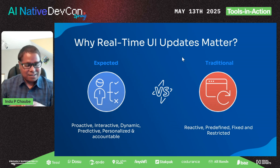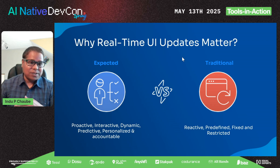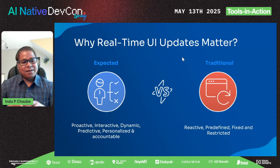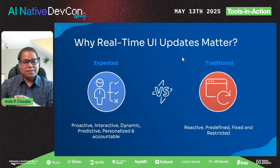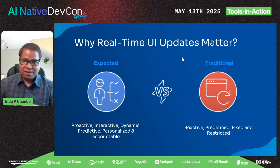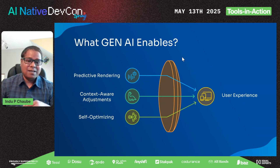There is a lot of discussion happening behind the scenes about how publicly generated models can connect with user data — nobody wants to let that connect. My exploration is how we can create a close binding between Gen AI and user-specific data in an authentication and authorization way so that they can connect in real time, merge with each other, and produce a result as the user wants. What does Gen AI enable? Gen AI enables predictive rendering, context-aware adjustments, and self-optimization.